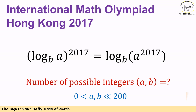Hello everyone. In this video we are going to talk about a problem from the International Mathematics Olympiad, Hong Kong 2017. The problem involves logarithmic operators: log of A in base B to the power of 2017 is equal to log of A to the power of 2017 in base B. We want to find all possible values for A and B, where A and B are greater than zero and no more than 200. Before moving to the solution, make sure you pause the video to think about the problem.